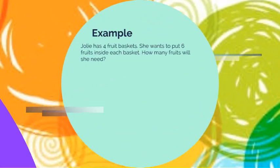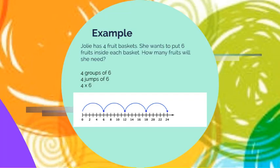Let us start with another example. Julie has four fruit baskets. She wants to put six fruits inside each basket. How many fruits will she need? Four groups of six. Four jumps of six equals four times six, which is four is the factor, and the product is 24.